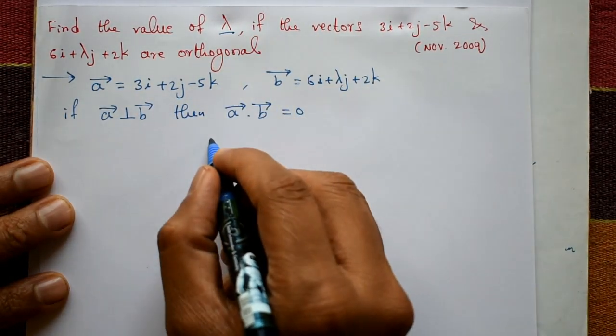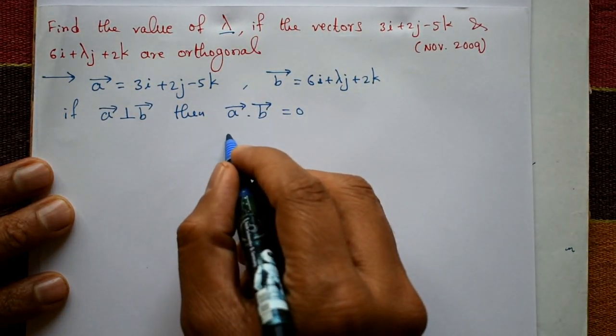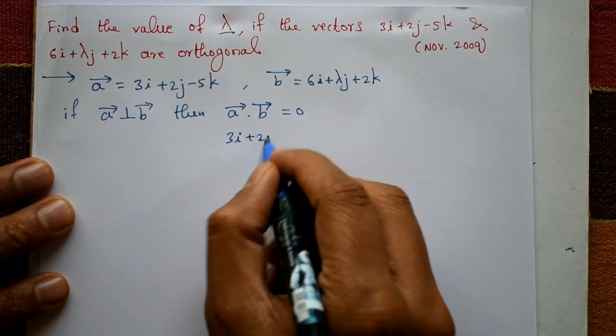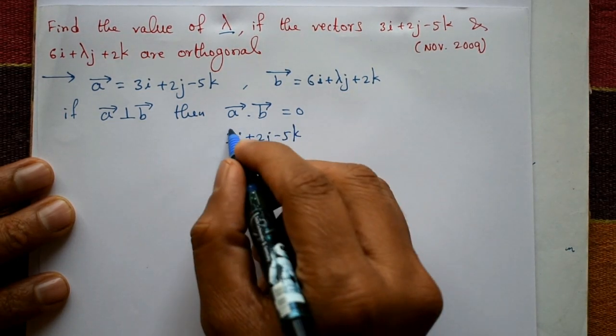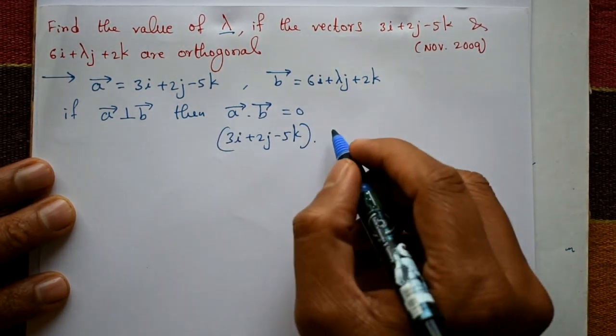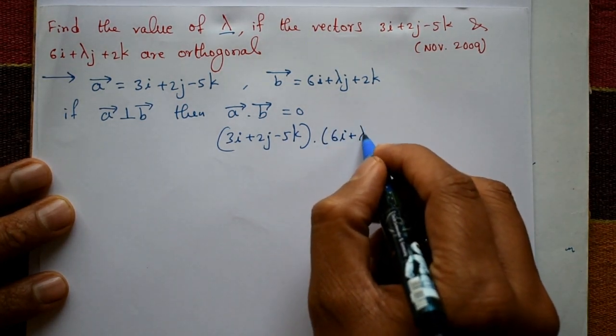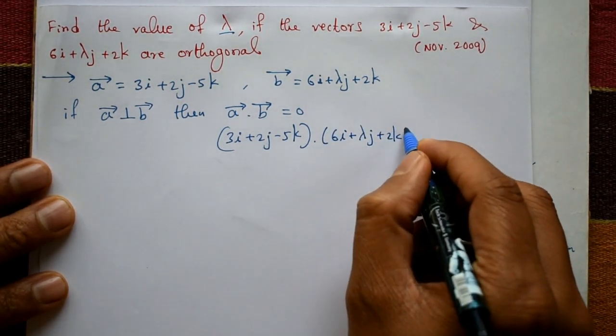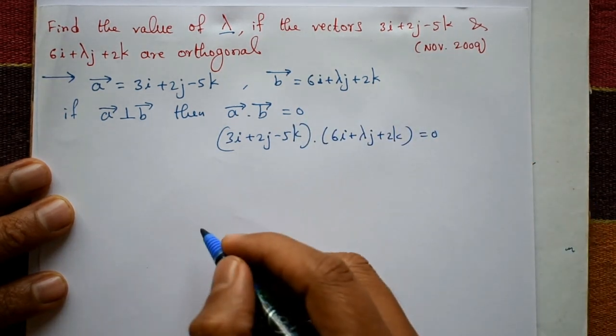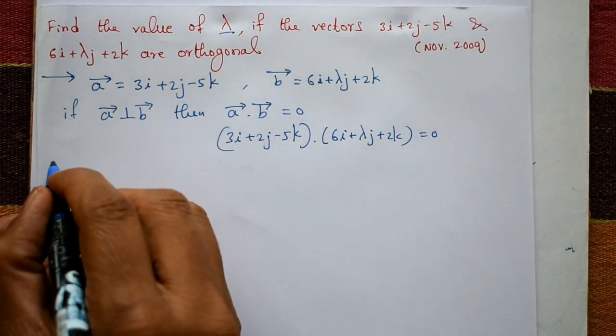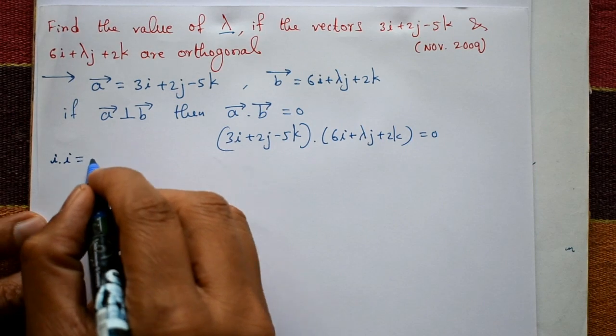Now vector a is 3i plus 2j minus 5k into the vector b is 6i plus lambda j plus 2k, that is equal to the right hand side. Okay, you know the property: i into i, that is equal to j into j, that is equal to k into k, is always 1.